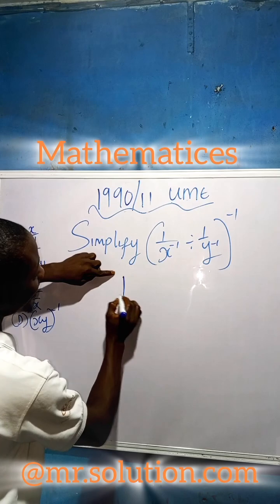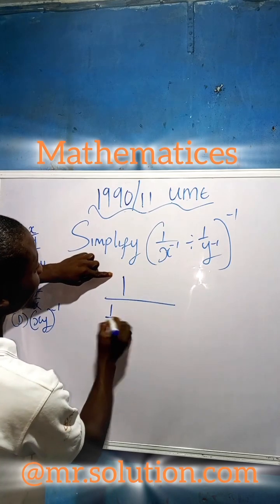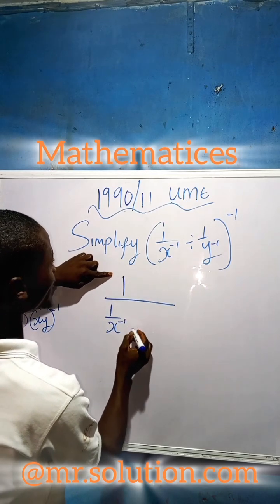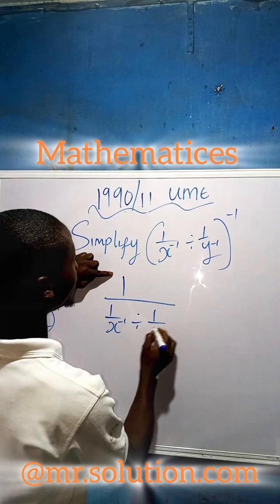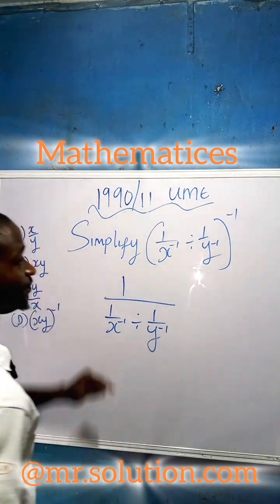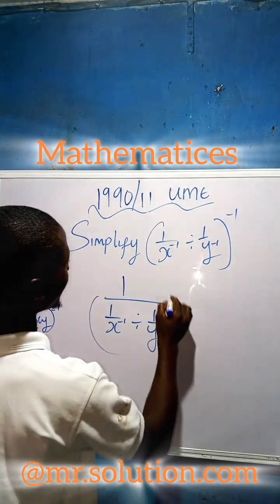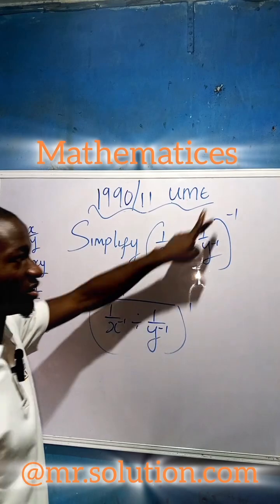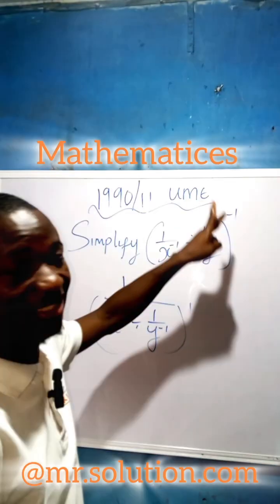We now bring it up. Now it's one over, then one over x minus one, divided by one over y minus one, all to the power of one, because we have made use of this negative sign.